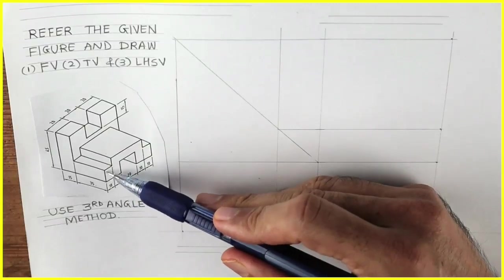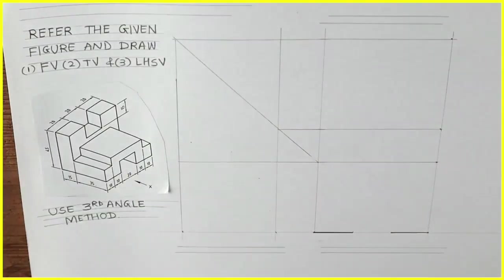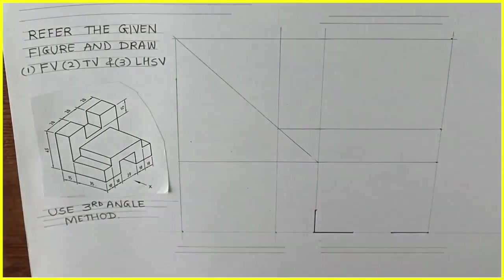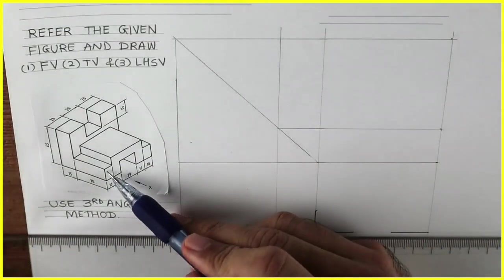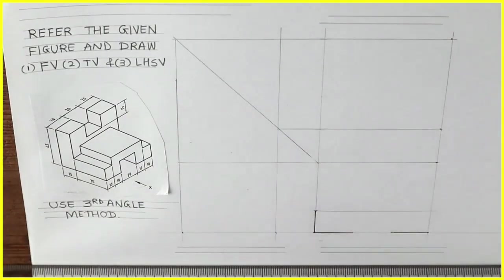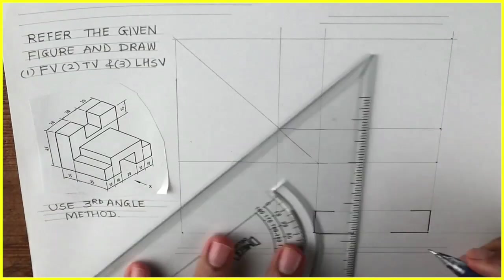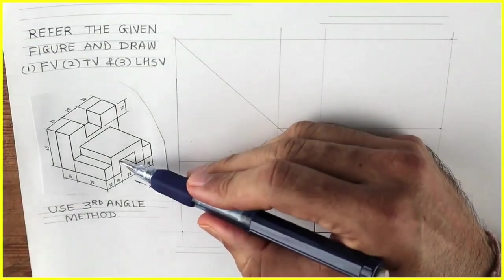This is 15. This is 10. We'll go inside by 10 on both the sides. This is also 15.